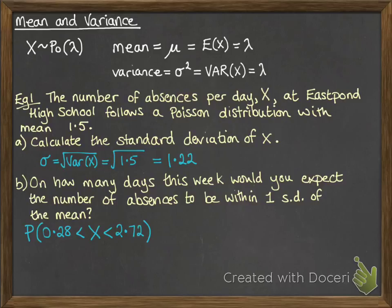Now a Poisson distribution can only take whole numbers, so we're looking for the whole numbers between 0.28 and 2.72. So that's going to happen if x equals 1 or x equals 2.